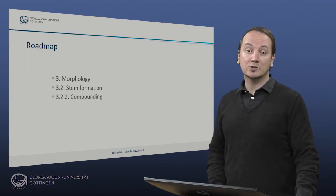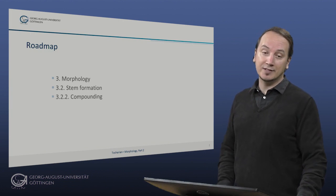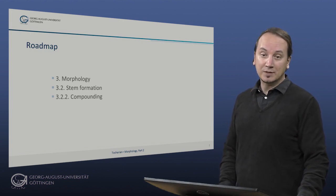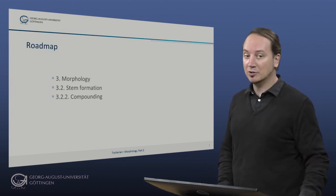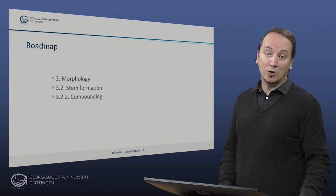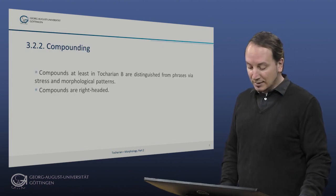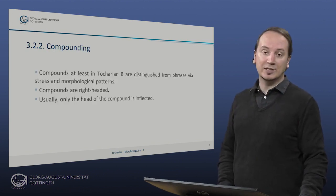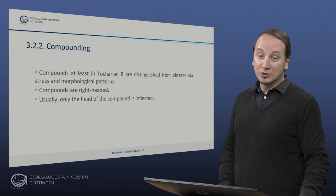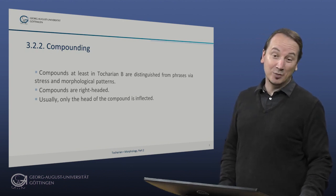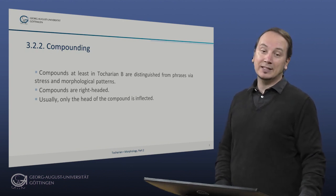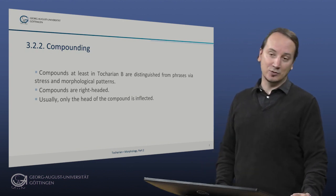Compounds, at least in Tocharian B, are distinguished from phrases via stress, so see the second part of our phonology session. Compounds are often also distinguished from phrases by certain morphological patterns. Compounds in Tocharian are right-headed and usually only the head of the compound is inflected, but like in any other language there are exceptions to this general rule.